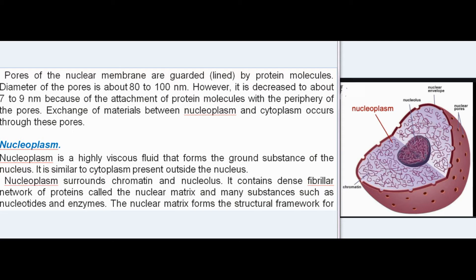Exchange of materials between nucleoplasm and cytoplasm occurs through the pores. Nucleoplasm is a highly viscous fluid forming the ground substance of the nucleus. It surrounds chromatin and nucleolus and contains a dense fibrillar network of proteins called the nuclear matrix, along with many substances such as nucleotides and enzymes. The nuclear matrix forms the structural framework for organizing chromatin. The soluble liquid part of nucleoplasm is known as nuclear hyaloplasm.